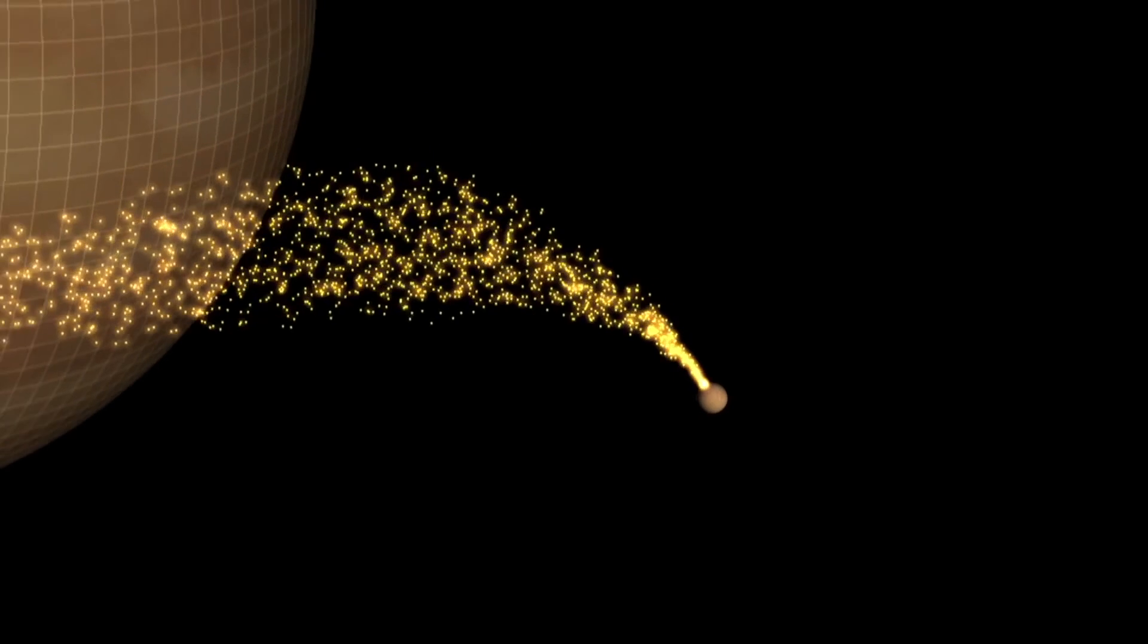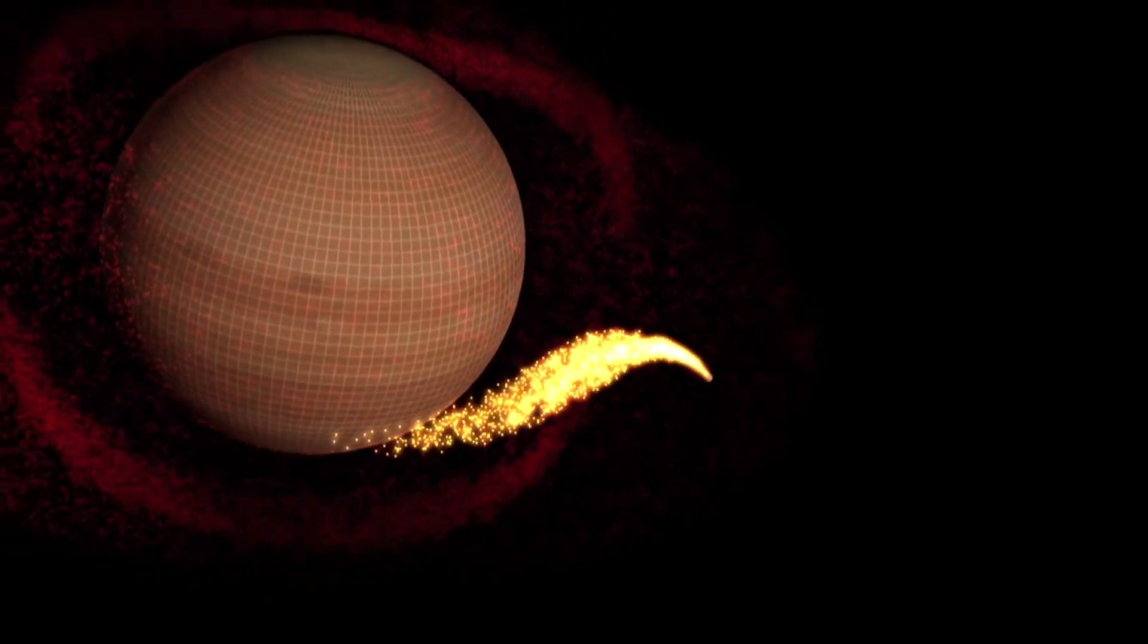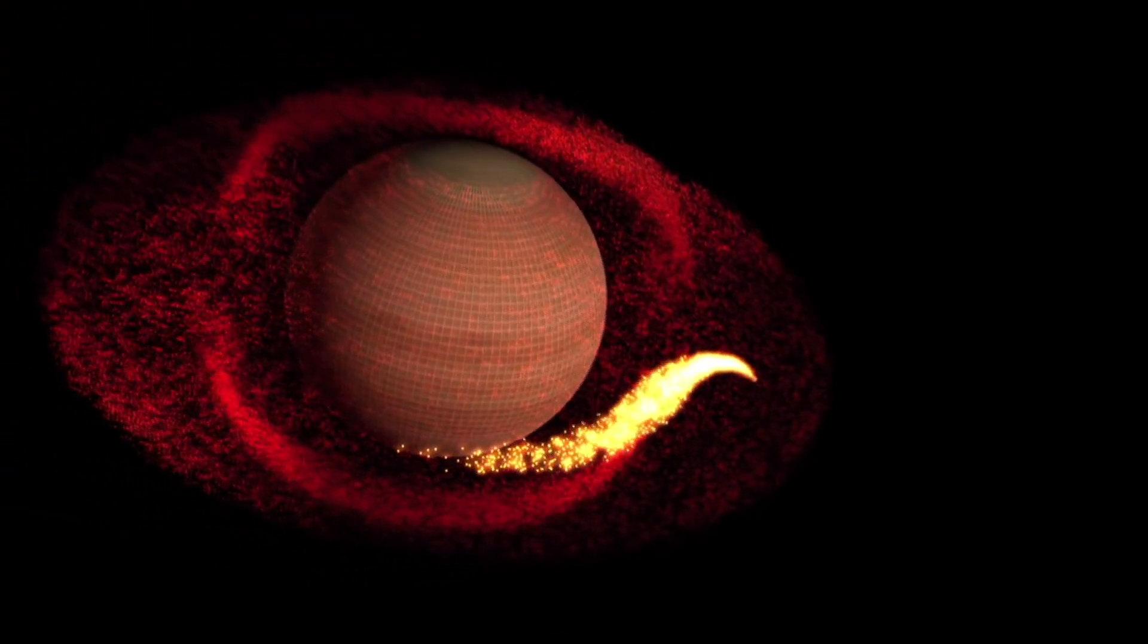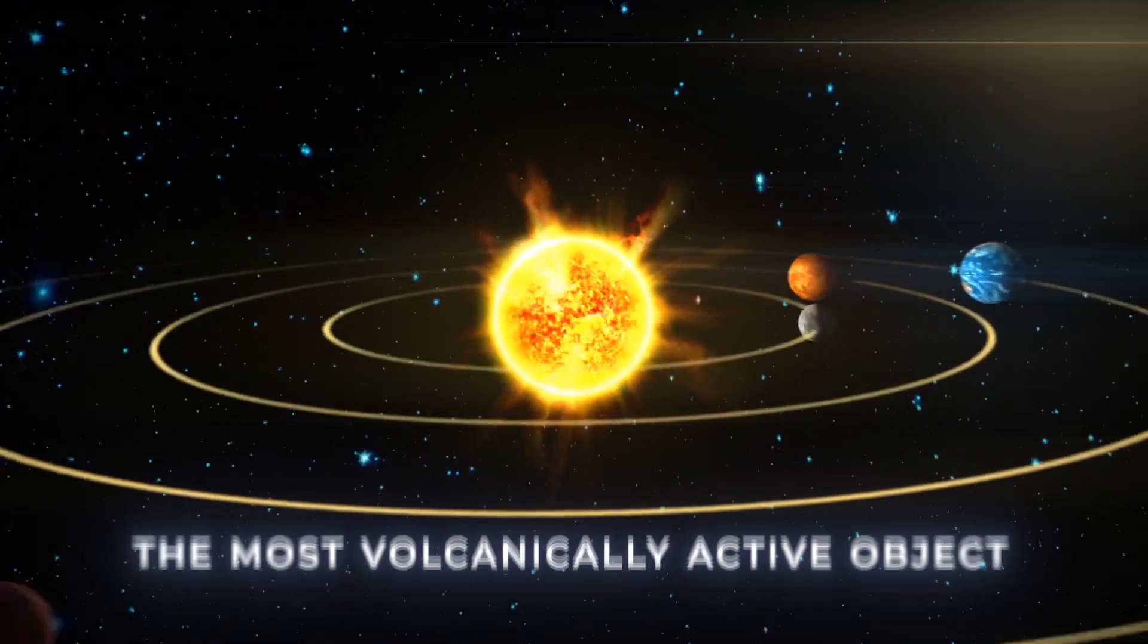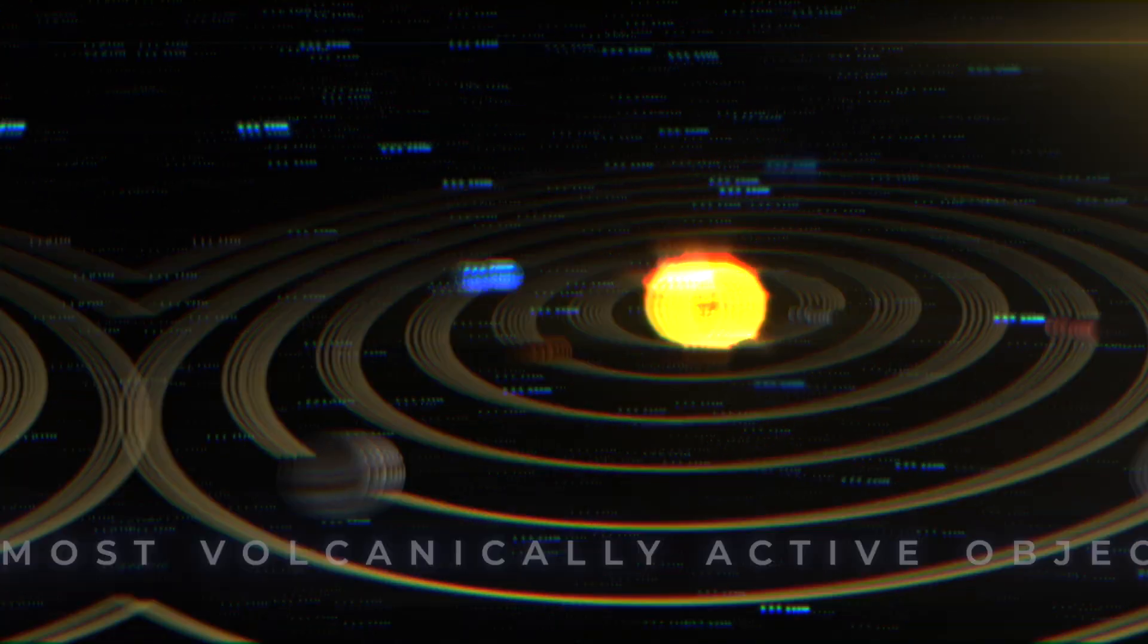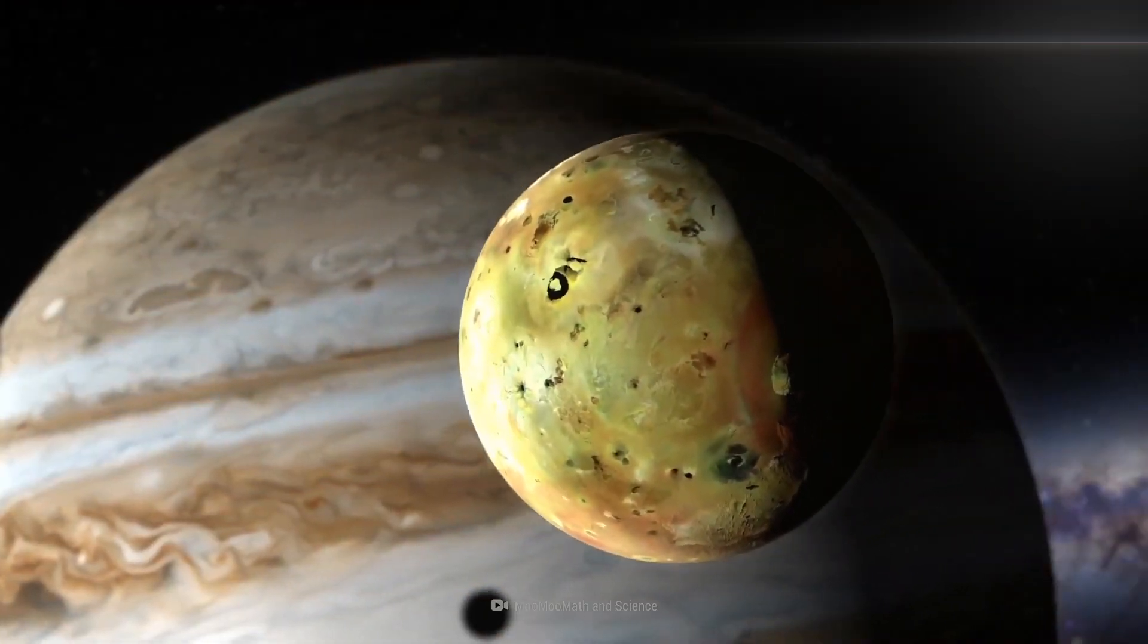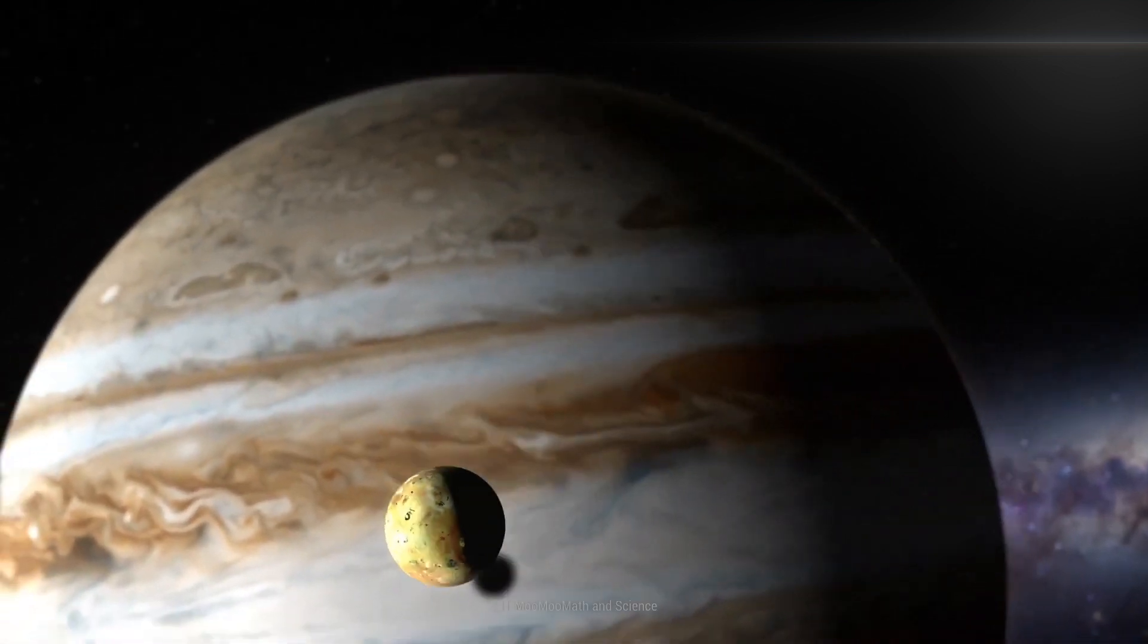Such a high level of volcanic activity was completely unexpected for such a small moon so far from the sun. Despite the size, Io is the most mechanically active object in the entire solar system. We must look to nearby Jupiter to uncover the reason behind Io's unusual geologic vigor.